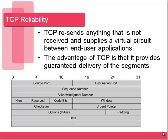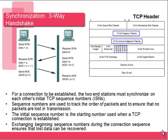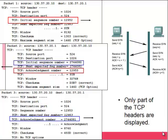TCP resends anything not received and supplies a virtual circuit between end applications to guarantee delivery and make sure the device is ready to accept packets. To do this, we perform a three-way handshake — sending over a sequence number and acknowledging that sequence number. These are actual packets sniffed on a network. Host A is going to send to Host B, and we'll do the three-way handshake. Host A sends its sequence number, which happens to be 12,952.